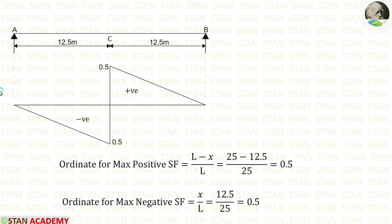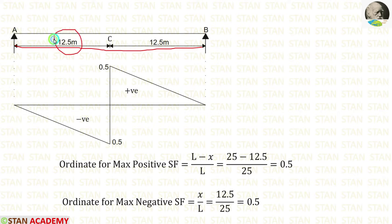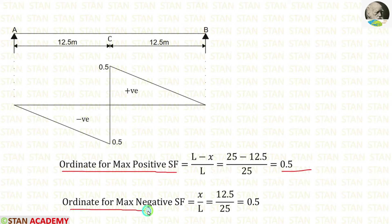We have been asked to find out the maximum positive shear force and the negative shear force at mid span. So, in the mid span, let us make a point — that is point C. We know the formula for the ordinate for maximum positive shear force, which is (L minus X) by L. The length of the beam is 25 meter and X is 12.5, giving an ordinate of 0.5. For maximum negative shear force, the formula is X by L, and we are also getting 0.5.